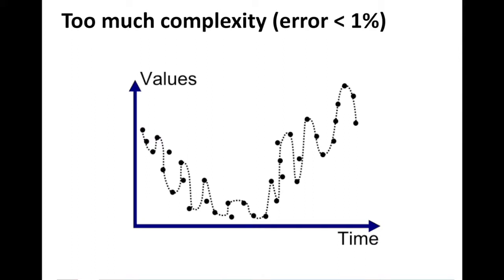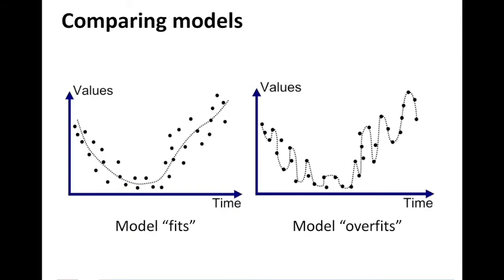So the error here is less than one percent because it is going through almost all data points. But even then this is not a better model than the curve that we saw because this model, the model on the right, has too much complexity. So we call such a model which has more than enough complexity, way more complexity than what we require to be a model that overfits.